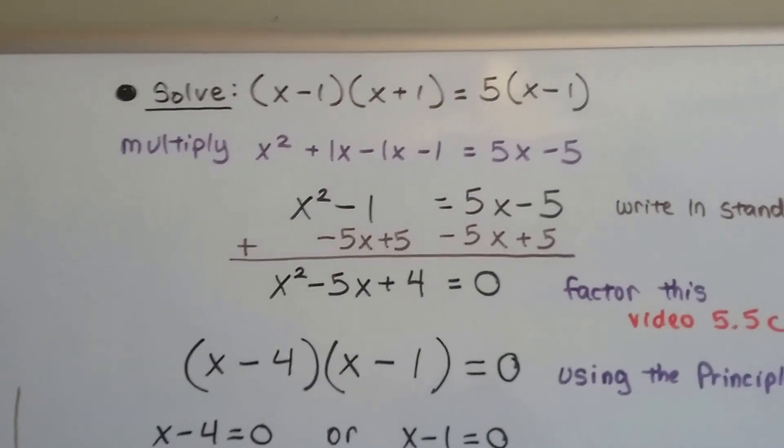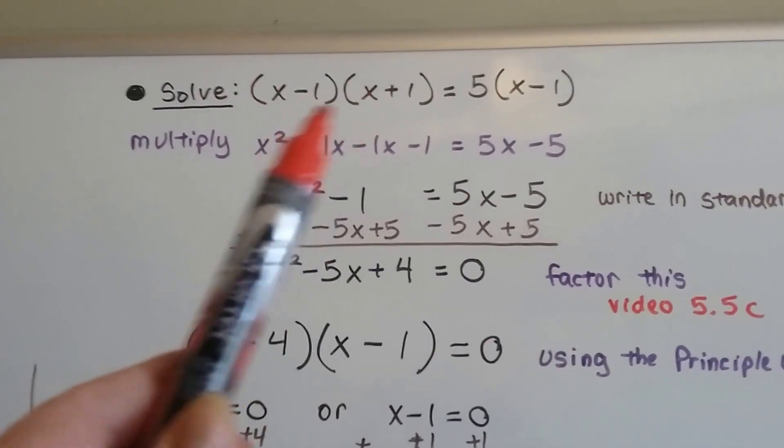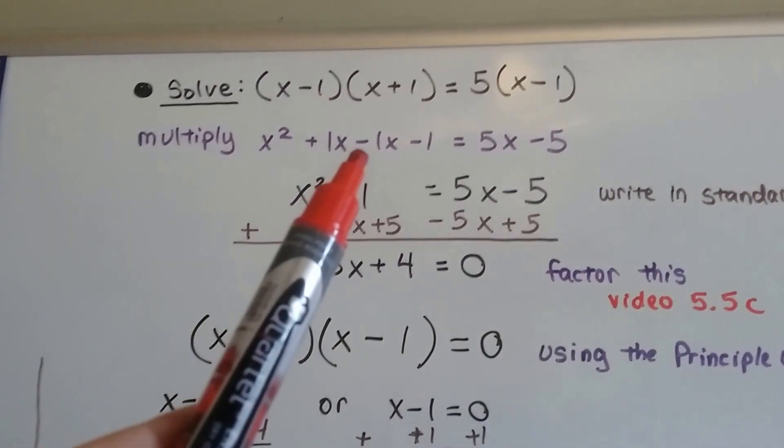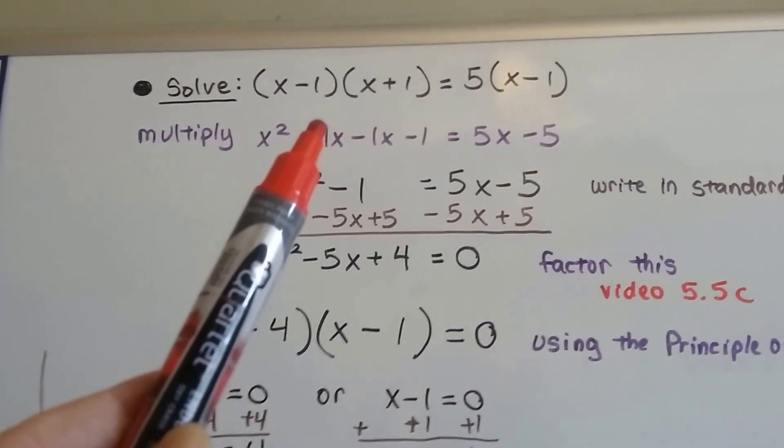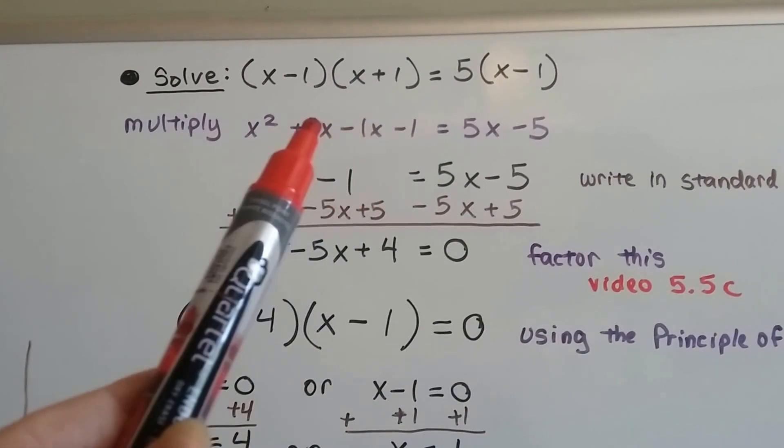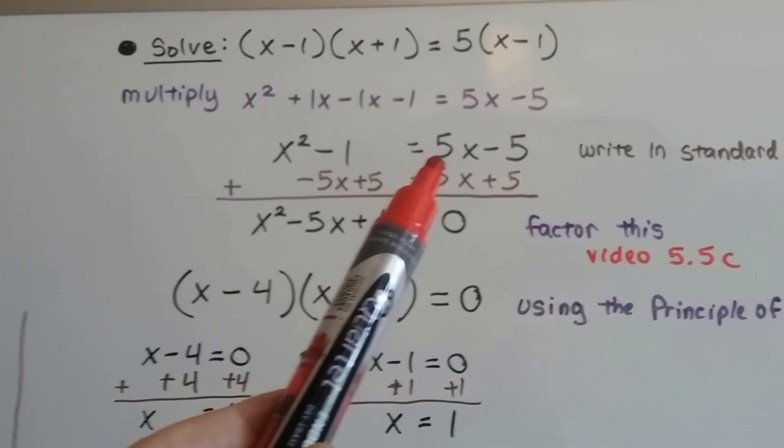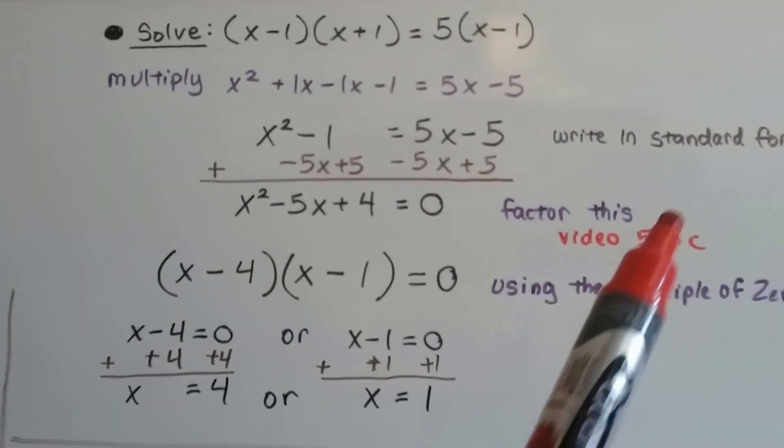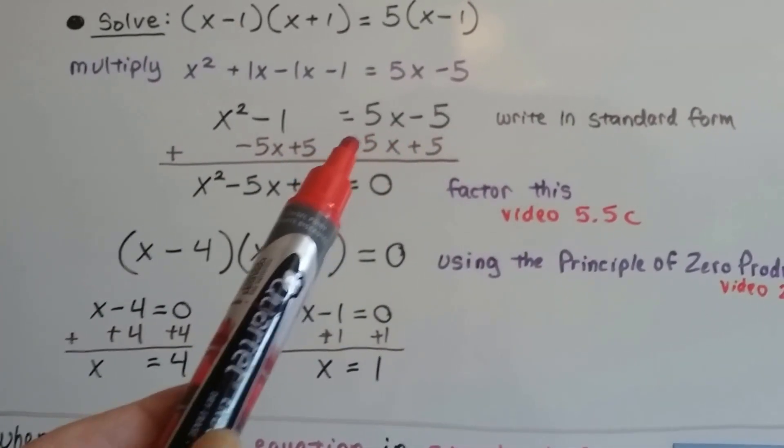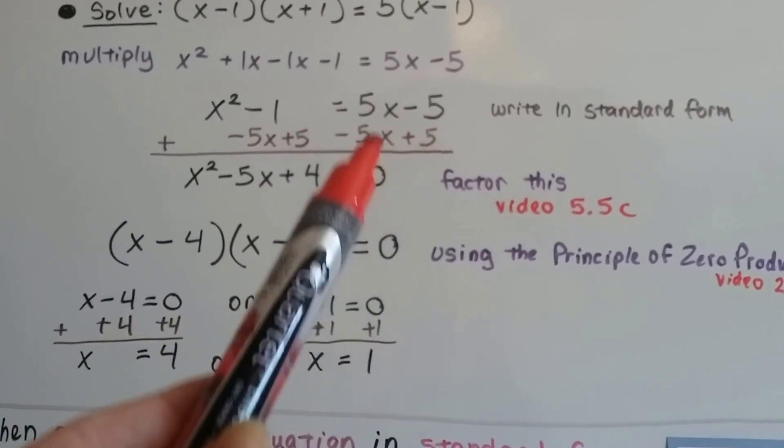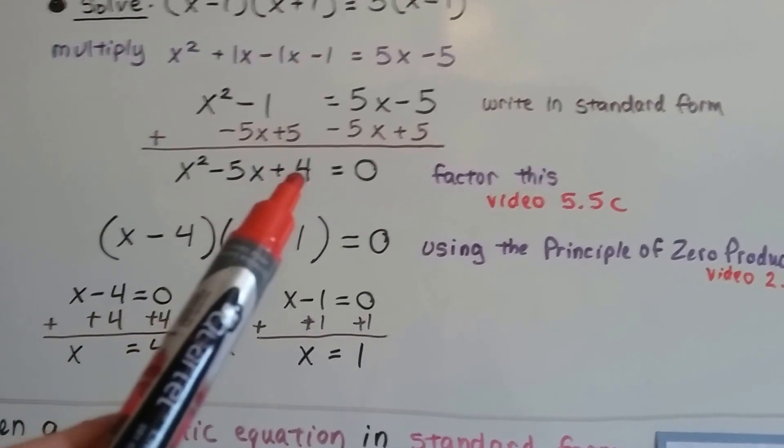So we can solve x minus 1 times x plus 1 equals 5 times x minus 1. And we FOIL this, we multiply it. We get x squared plus 1x minus 1x minus 1 equals, and we distribute this side, 5x minus 5. And this positive 1x and this negative 1x cancel each other out as additive inverses, don't they? So we have x squared minus 1 on this side, and it equals 5x minus 5. We write it in standard form. We can subtract this as negative 5x plus 5 to set this to equal 0, and then we have to do it to this side, so we get x squared minus 5x plus 4 equals 0. Now it's in standard form.